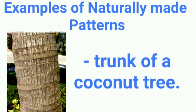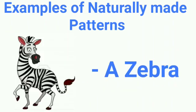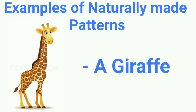This is a coconut tree trunk. The pattern of lines on the trunk of a coconut tree are naturally made. This is a zebra. The black and white stripes on the body of a zebra are natural patterns.